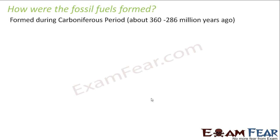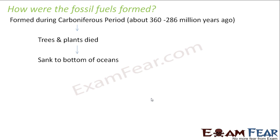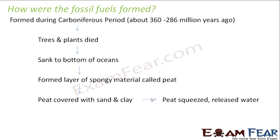Since carbon is the main constituent of coal, when we burn coal, a lot of energy is emitted. During the Carboniferous period, trees and plants which died sank to the bottom of the oceans. In due course of time, they formed a layer of spongy material called peat. This peat got covered with sand and clay, and with the passage of time, more and more sand and clay deposited over it.